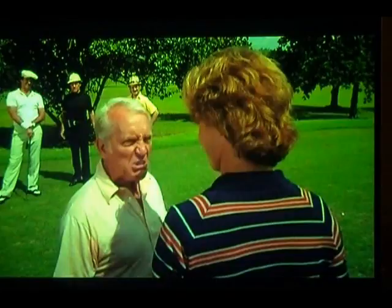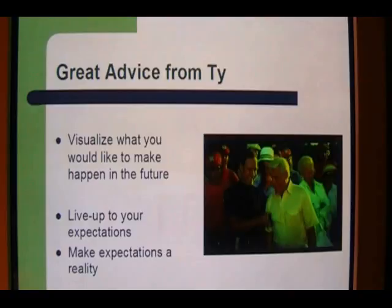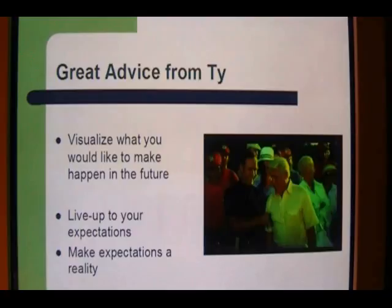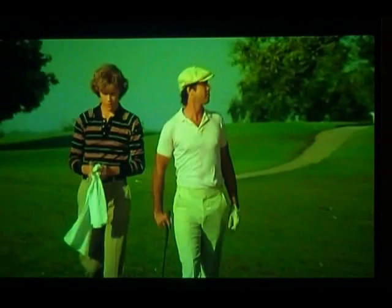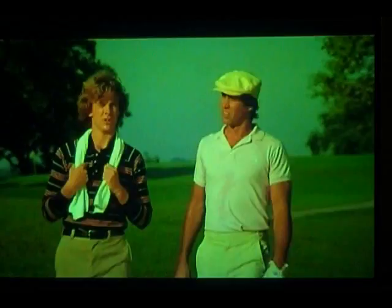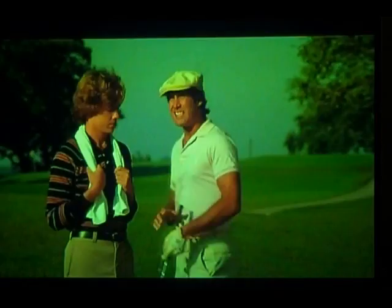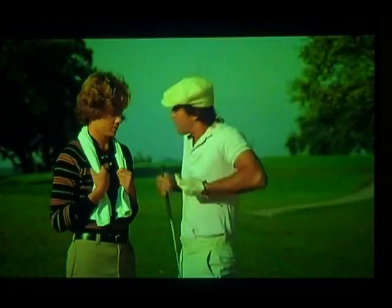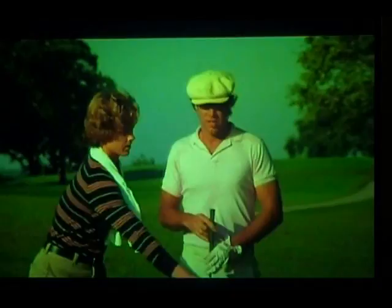The final scene we will analyze shows Ty as an informal primary and aspirational reference group member, projecting informational, utilitarian, and value-expressive influences. Once again, Ty suggests for Danny to visualize what he desires and behave in a manner that will satisfy those desires. You have to win this hole. Kind of thought winning wasn't important. Me winning isn't. You do. Great grammar. Danny. See your future. Be your future. Make your future, Danny.